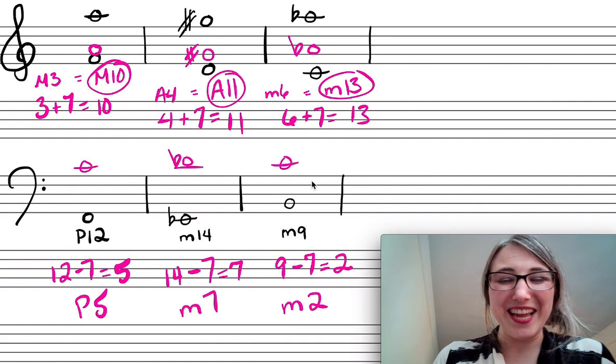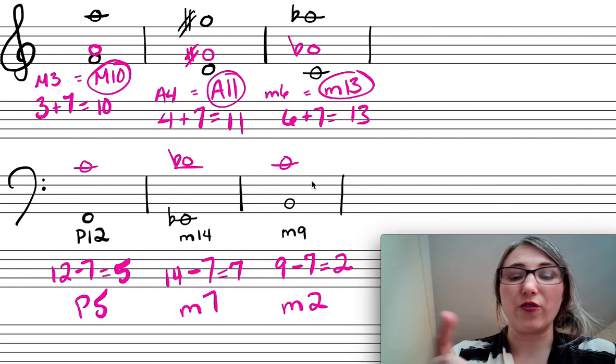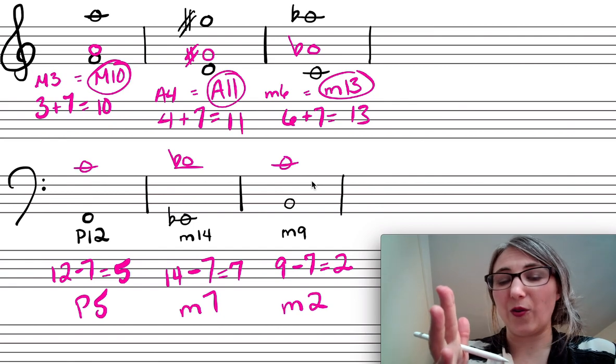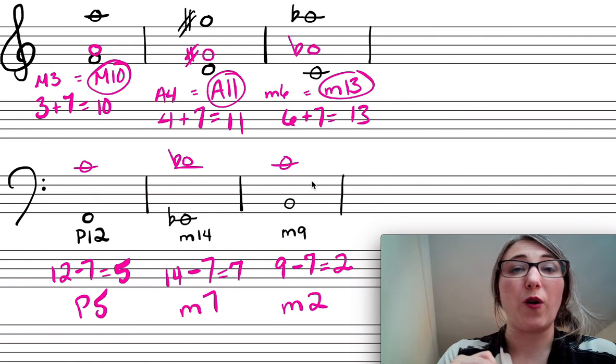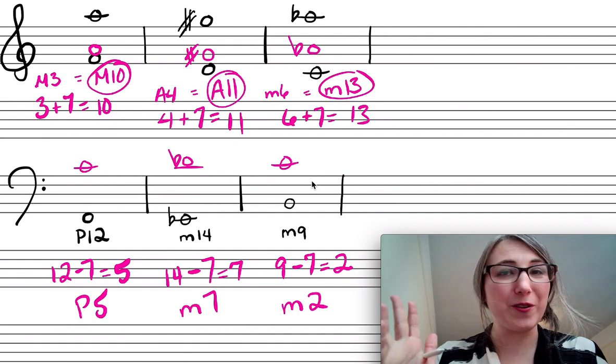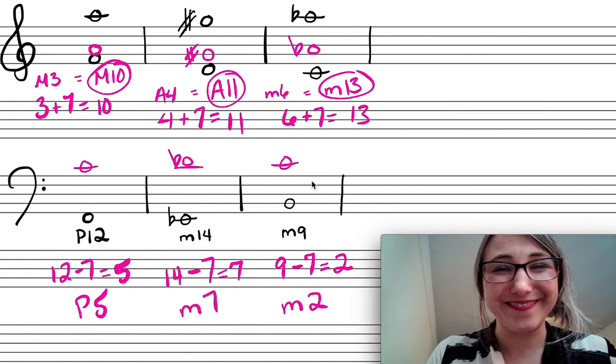So the trick is seven — you're either going to add it or subtract it, and make sure you keep the quality the same. Good luck with compound interval construction!